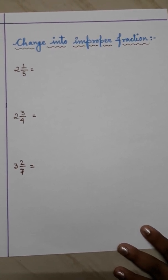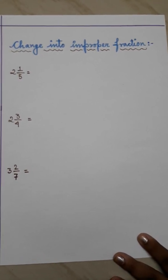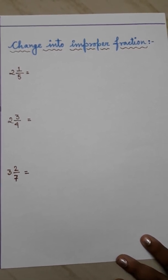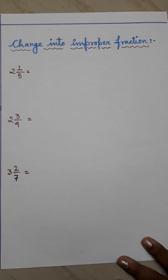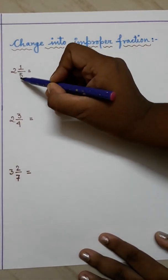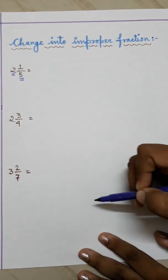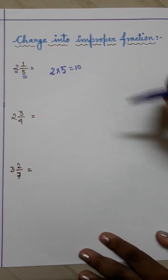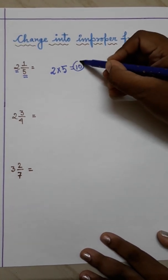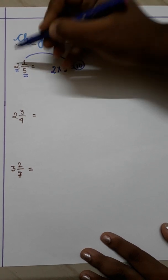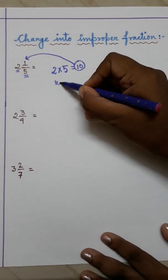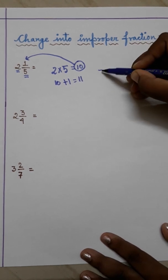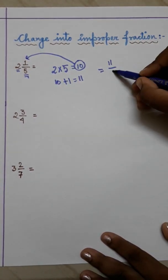Next is changing a mixed fraction into an improper fraction. Here a mixed fraction will be given and you have to change it into an improper fraction. This type of sum has two steps. First, multiply the whole number by the denominator — that means 2 multiplied by 5 equals 10. Then add that result to the numerator: 10 plus 1 equals 11. So the answer is 11 by 5.